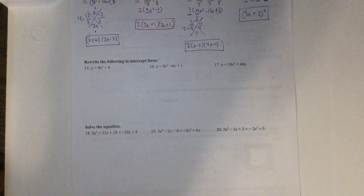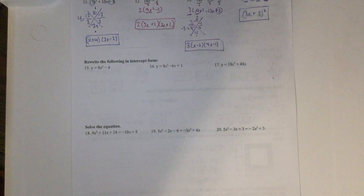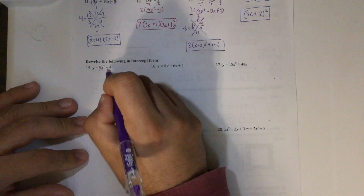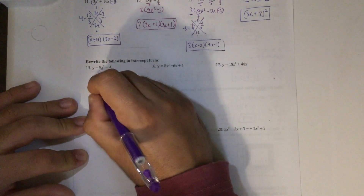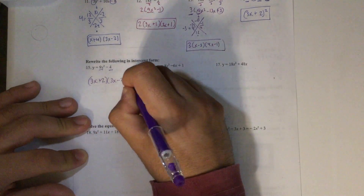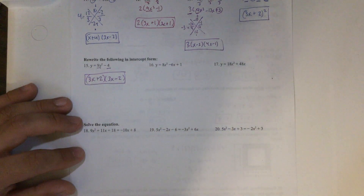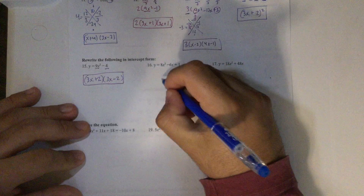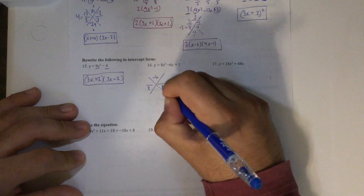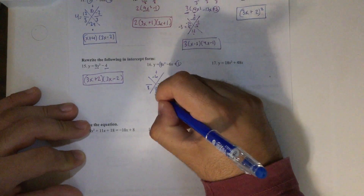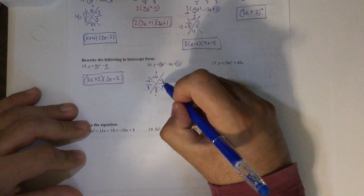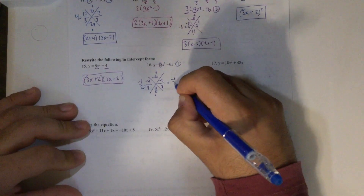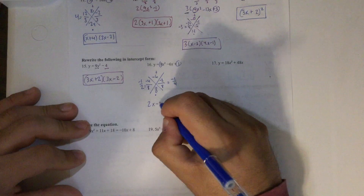Number 15 says to rewrite in intercept form — we're just factoring again. It's in standard form, no GCF, and it is a special case: perfect square times perfect square with a minus sign. The square root of 9x squared is 3x, and the square root of 4 is 2. Since there's a minus sign and only two terms, we write it twice: first one positive, second one negative. For number 16: standard form, no GCF, not a special case. Using the x method: negative 6 on top, divide by a which is 8, and 8 times 1 is 8. Factors negative 4 and negative 2 reduce to negative 1 half and negative 1 fourth, giving 2x minus 1 and 4x minus 1.